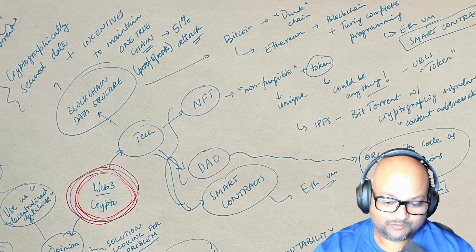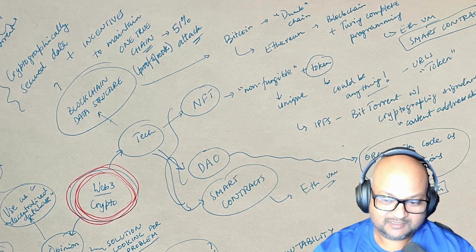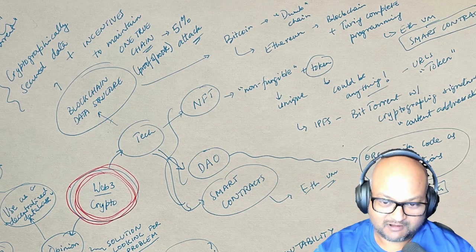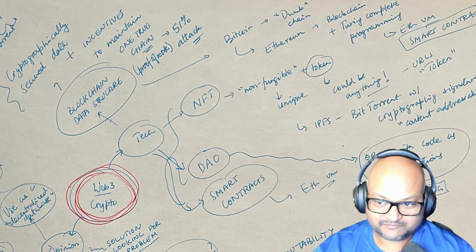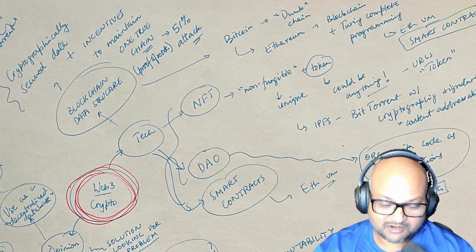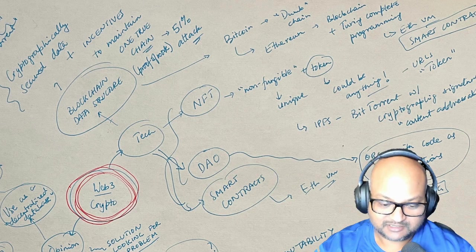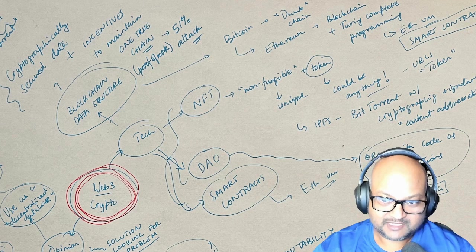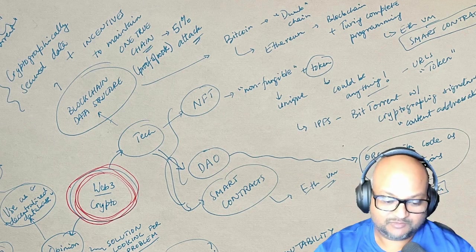The definition of the term Web3 is somewhat nebulous but in terms of what the technical building blocks of it are, the major technical building block of course is the blockchain and then there are a number of concepts that fall out of that. Things like smart contracts which are built on top of the blockchain, NFTs, non-fungible tokens, DAOs, decentralized autonomous organizations but all of these things are built on top of this fundamental data structure which is the blockchain.